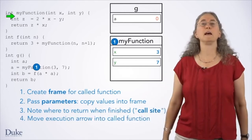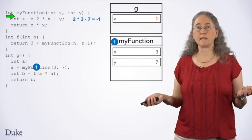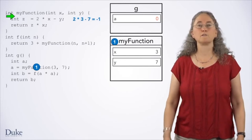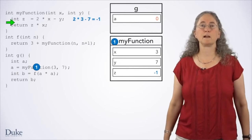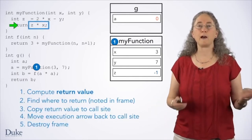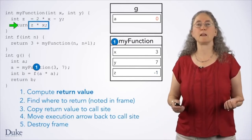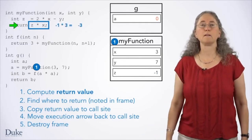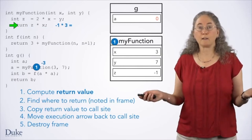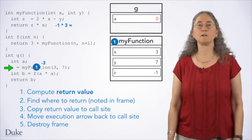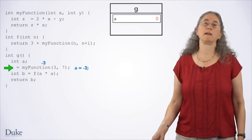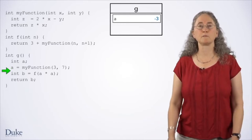Here, we declare and initialize z, evaluating the expression 2 times x minus y. The values for x and y come from the frame for myFunction — 3 and 7 respectively — so z will be negative 1. Now we have reached a return statement. Return statements tell us to leave the current function, returning to the call site noted in the frame. They also tell us the value to return to the caller. The expression is z times x, so we evaluate negative 1 times 3 and get negative 3. We find where to return, copy the return value back to the call site, move the execution arrow back to the call site, and destroy the frame for myFunction. Now we're back in g — the call to myFunction evaluated to negative 3, so this line behaves like a gets minus 3. We finish that assignment putting minus 3 in its box.